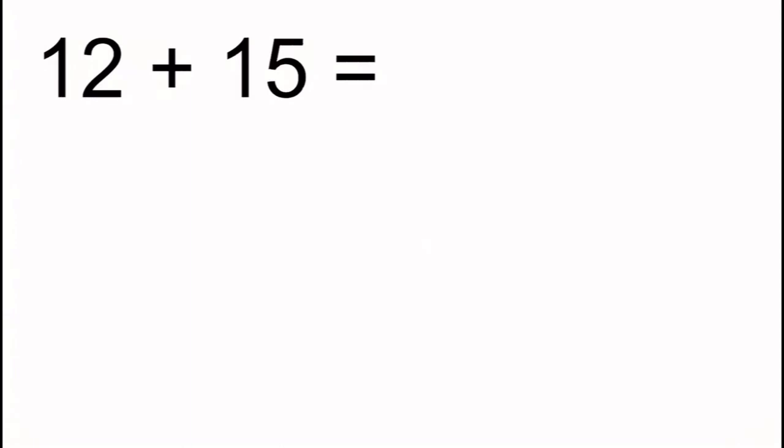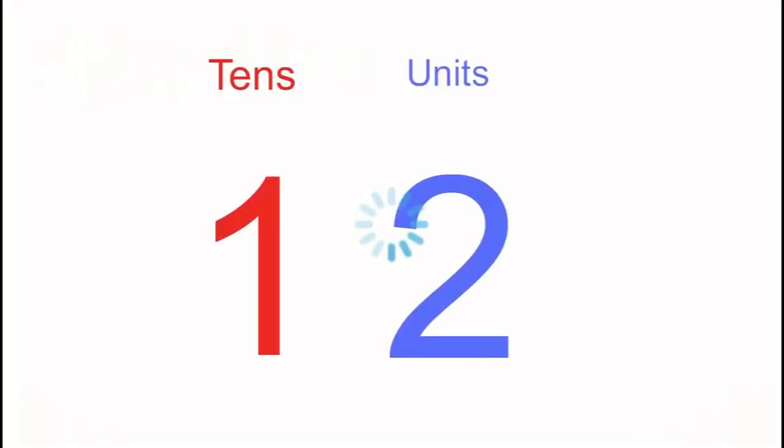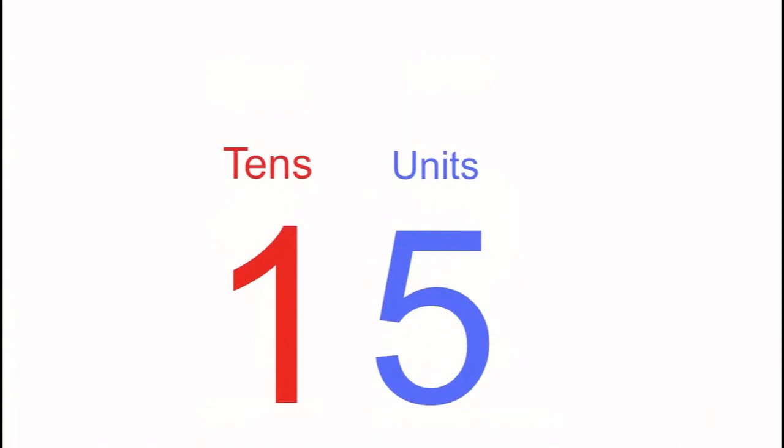The first step to column addition is we have to think of both of these numbers all by themselves. We're going to take the number 12 and split it into its tens and units. We know that 12 is made up of one 10 and two units. We're going to do exactly the same for the number 15 which we know is made up of one 10 and five units.